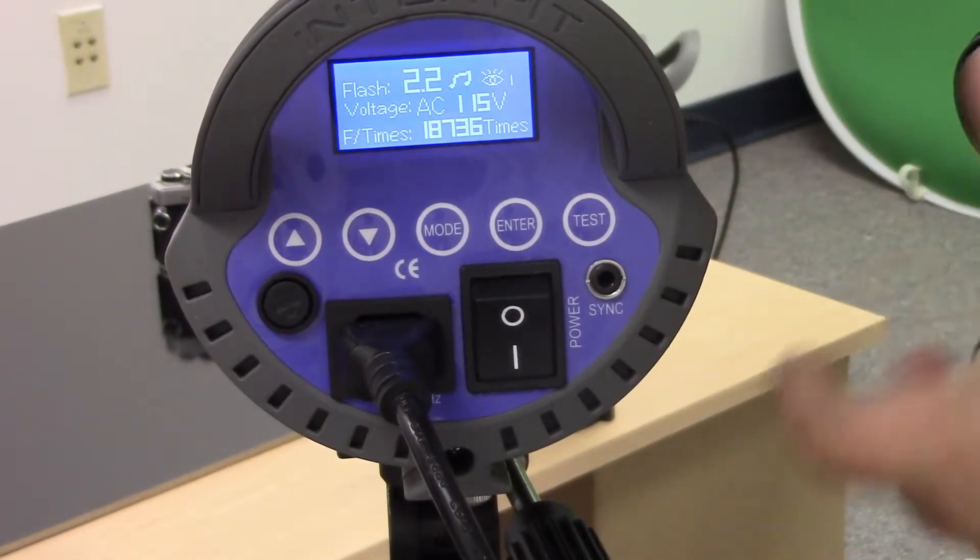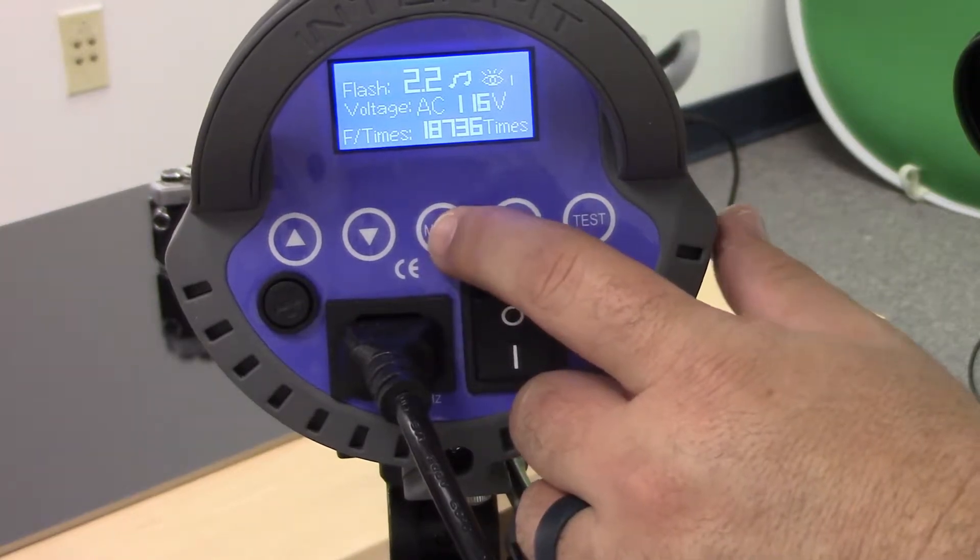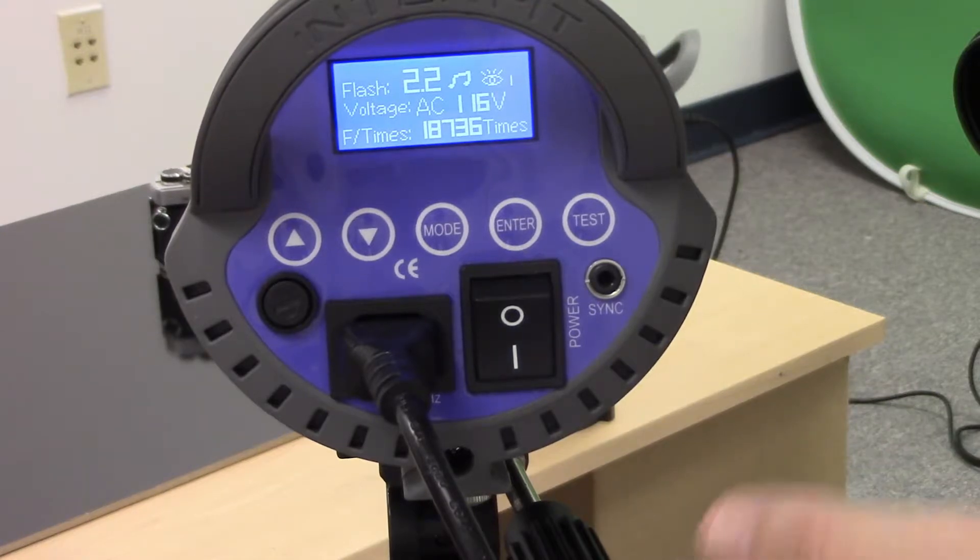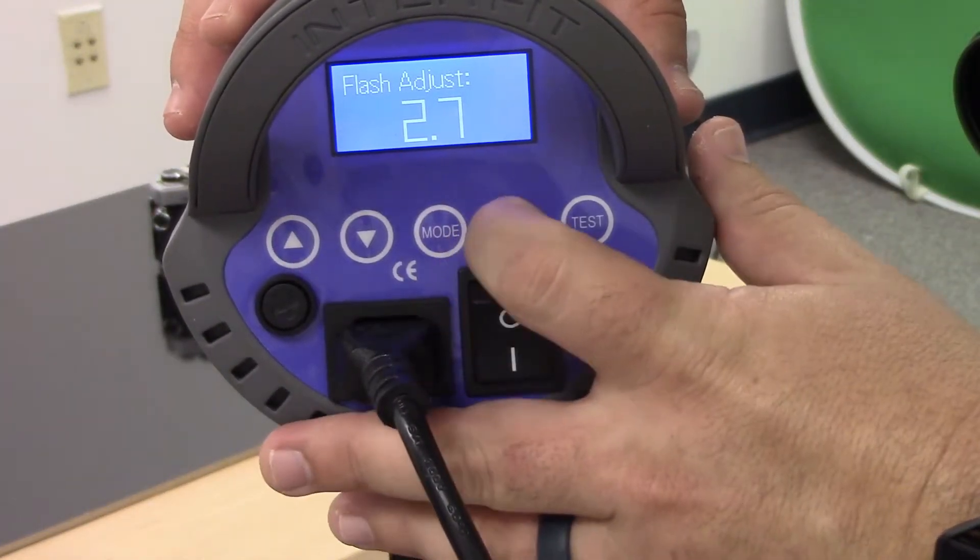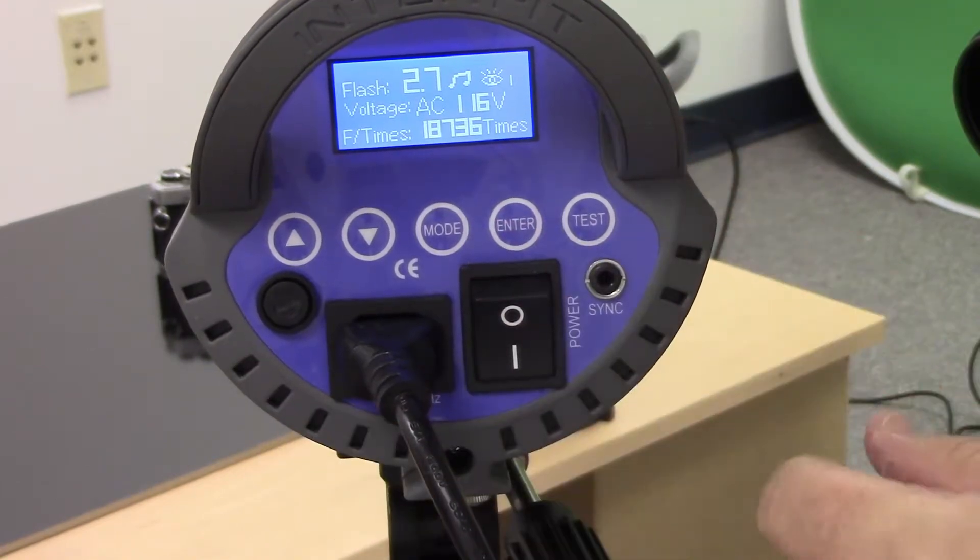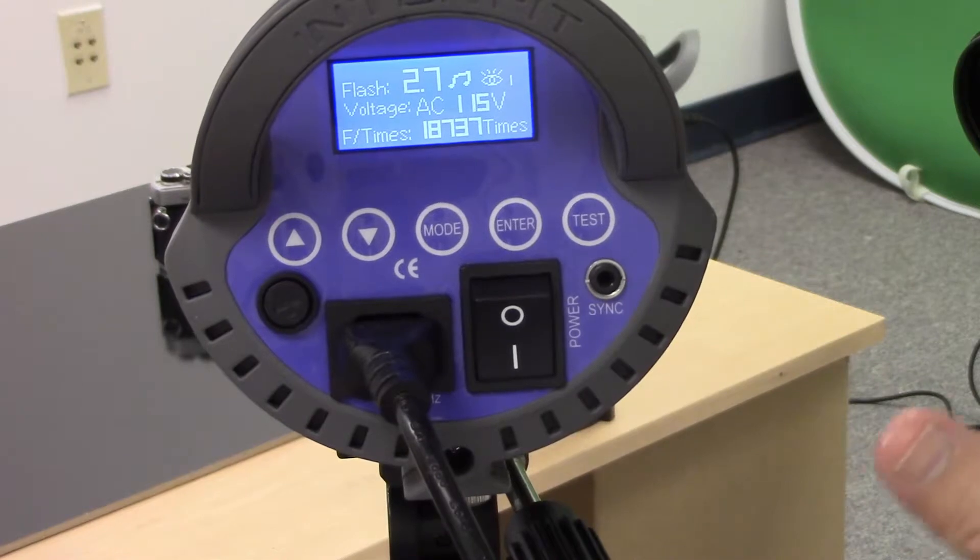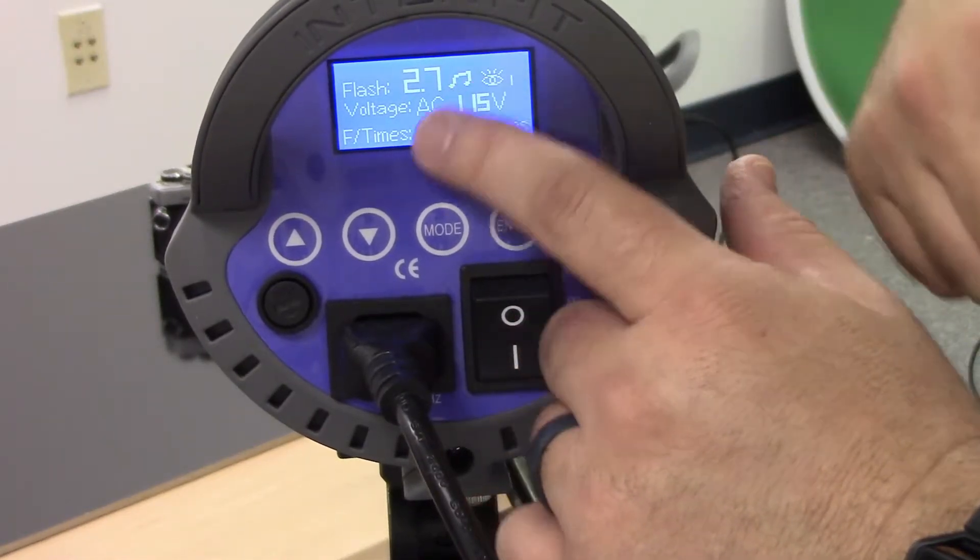What that does is that clears the buffer of this flash. So if I were shooting on this particular power 2.2 and I needed to change that, I would go in, make that higher, press enter and if it doesn't pop, you need to push test to clear the buffer. That way we know that we're shooting at 2.7 and not 2.2.